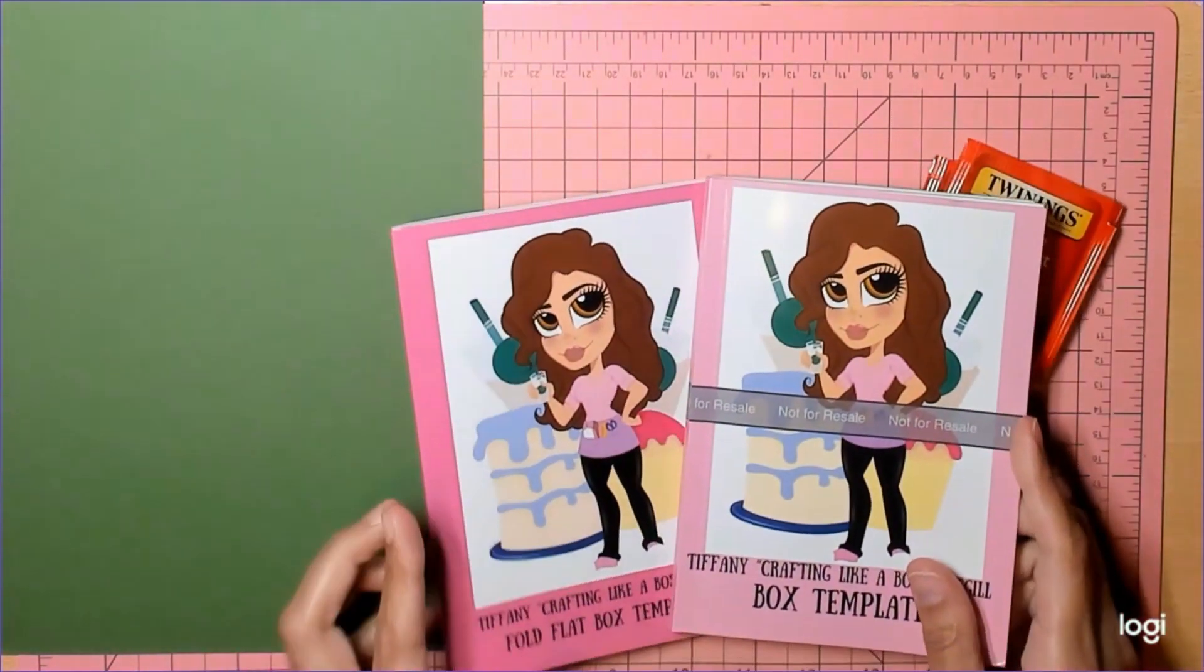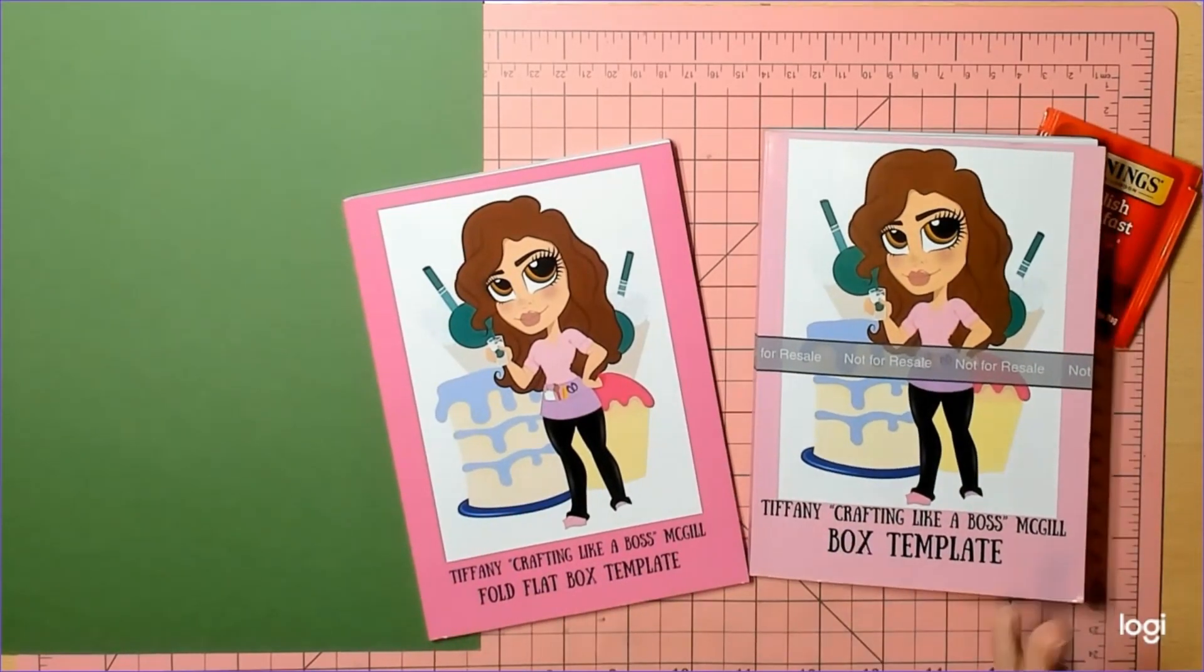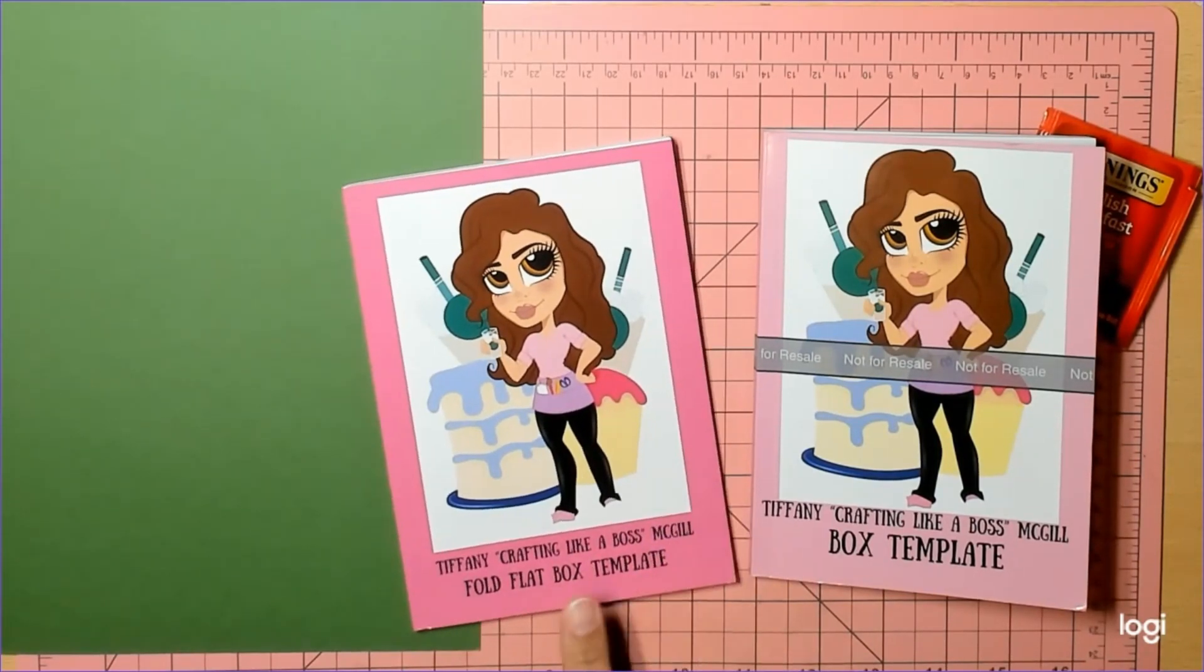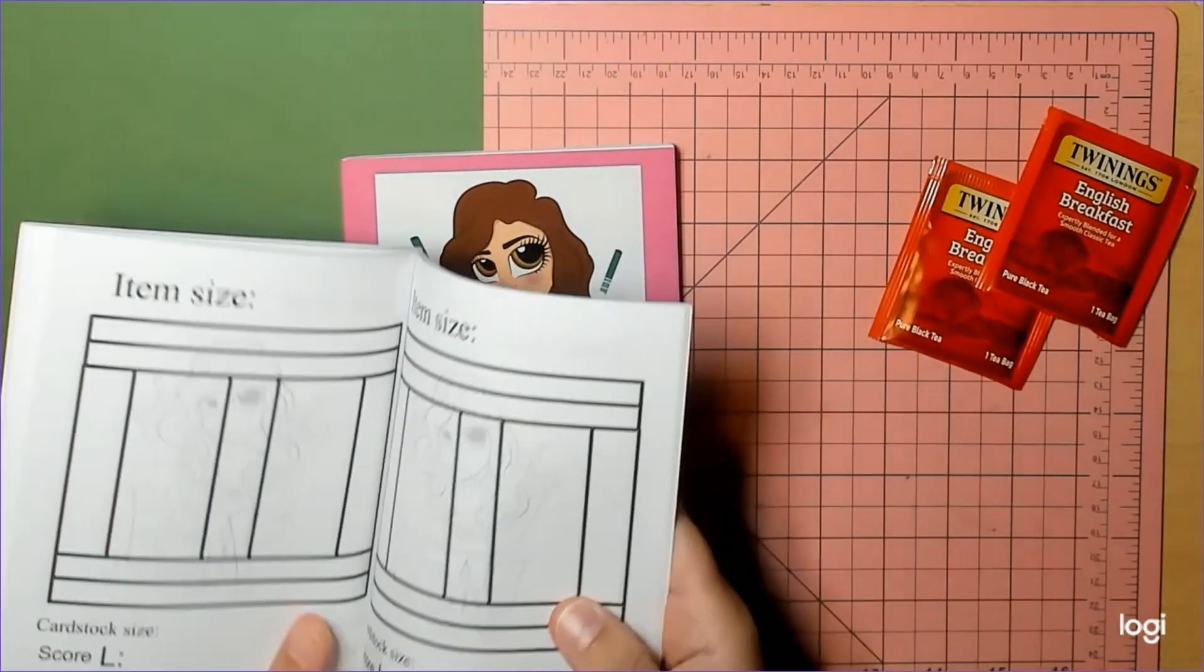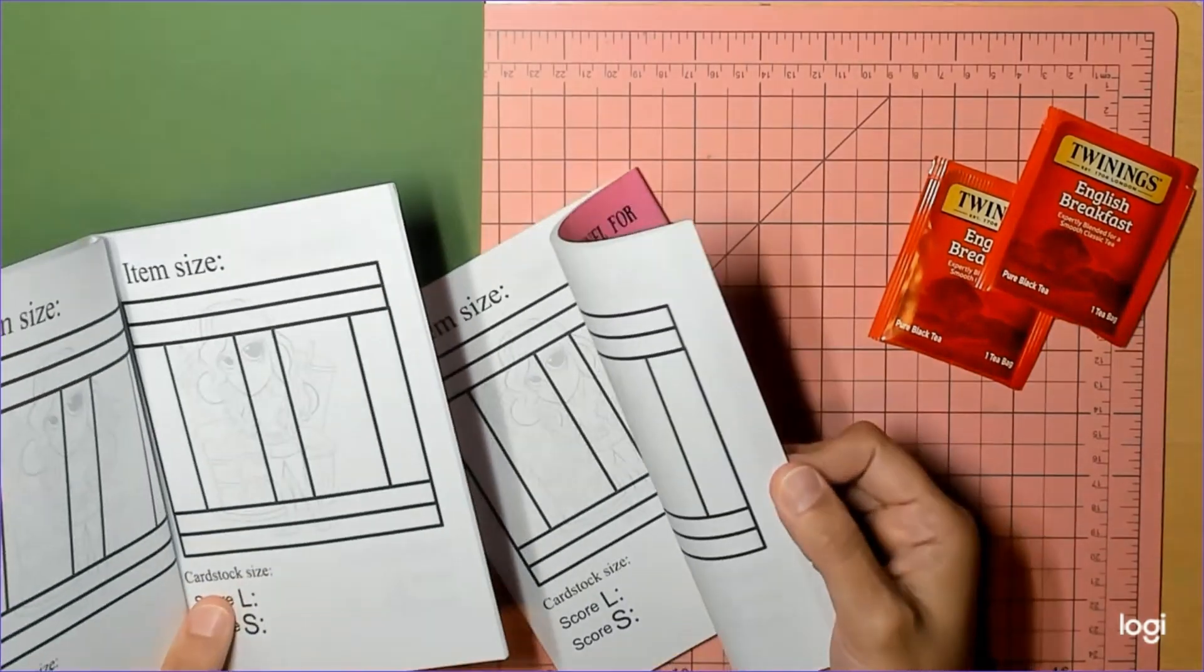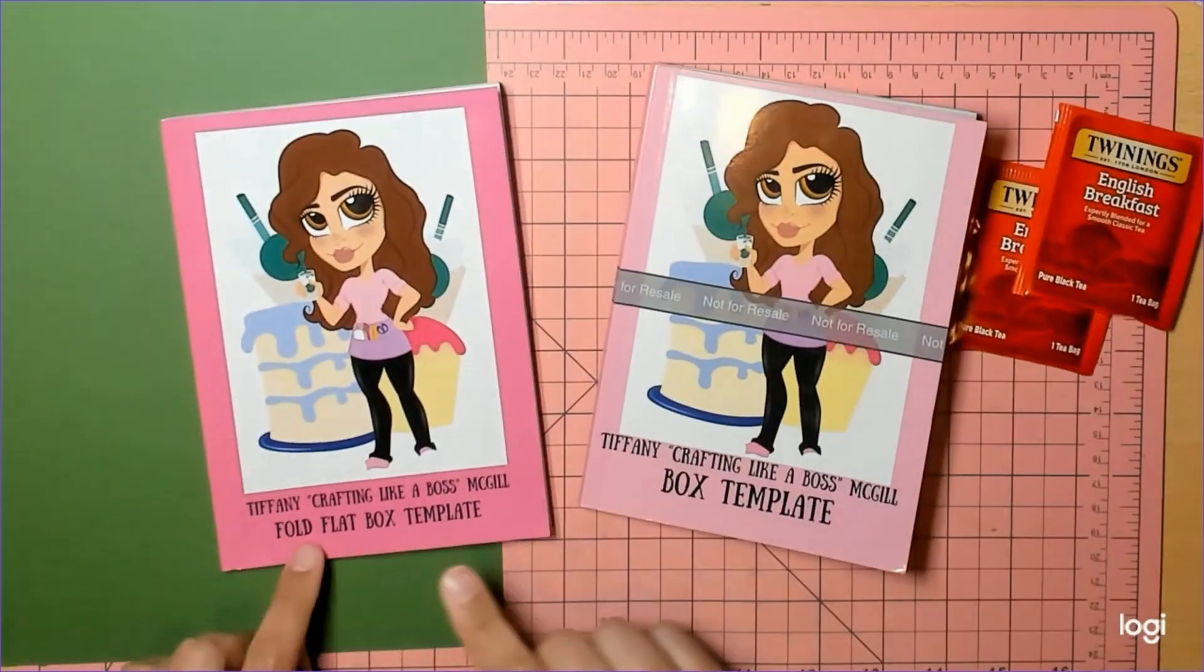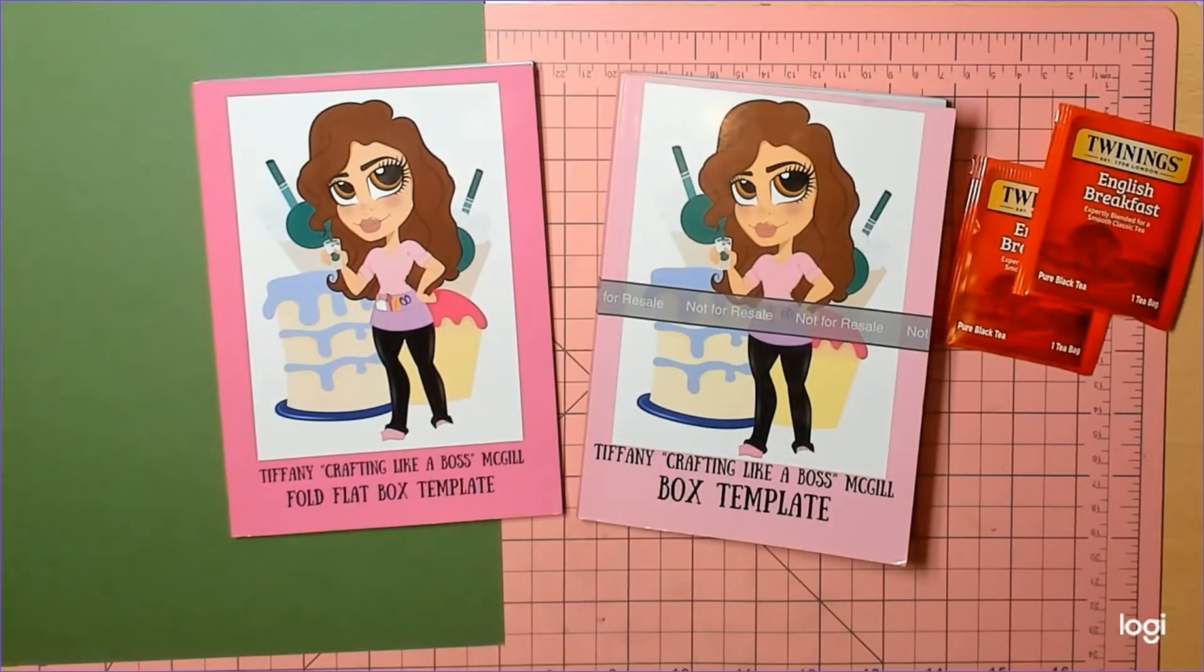We're going to do a fold flat box because that's going to be our quickest. So we're going to take out our pink book. If you ordered your pink book between January and February, you're going to get this one. It's the same on the inside, it's just the outside is different. I changed the name to Fold Flat Box as opposed to just Box Template.